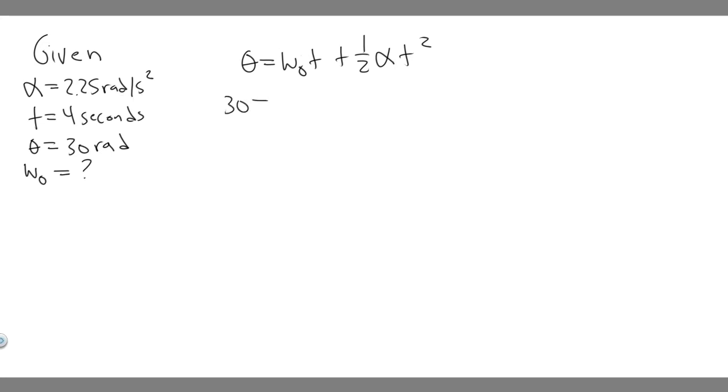So this is going to be 30. The angle is 30 radians equals omega 0 times t, which is 4, plus 1 half times angular acceleration, 2.25, times t squared, which is 4 squared, which is just 16. So I'm just going to write it as 16 because 4 squared is 16.